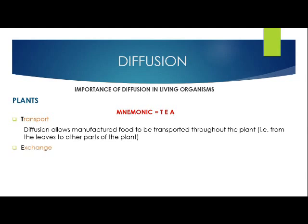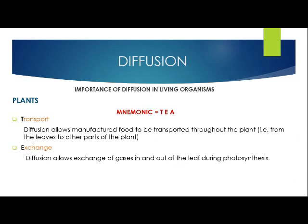E is for exchange. Diffusion allows exchange of gases in and out of the leaf during photosynthesis. Without diffusion, plants could not exchange gases and hence they wouldn't make their food. Diffusion also allows for the absorption of minerals from the soil, which is equally important and allows plants to make their food.